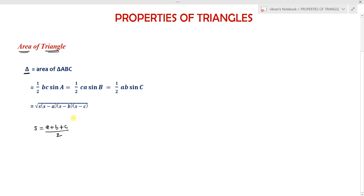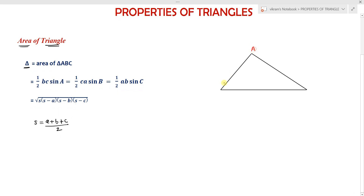Now let me consider how to find the proof. First, consider triangle ABC with vertices A, B, C. From vertex A, draw a perpendicular line to side BC. Let this point be D. AD is the height of the triangle.